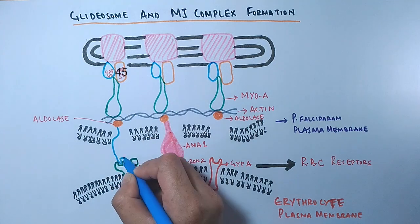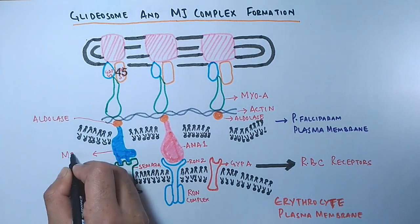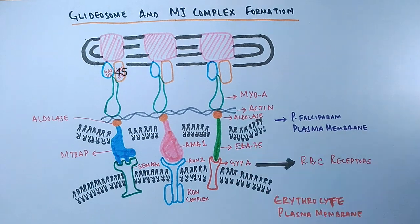AMA1 links to RON complex, M-trap links to SEMA7A, and EBA175 links to GYPA, as we have already stated in the receptor-ligand interactions.